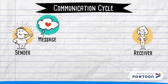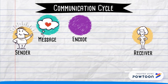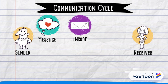That idea represents the third component in the communication cycle, and that is the message — the idea being communicated. Now we arrive at our fourth component, which is the encoding phase. To encode is simply to package the message, and you really only have three different options: verbal, nonverbal, or both. Our sender has decided that a love letter would be the best way to encode his message.